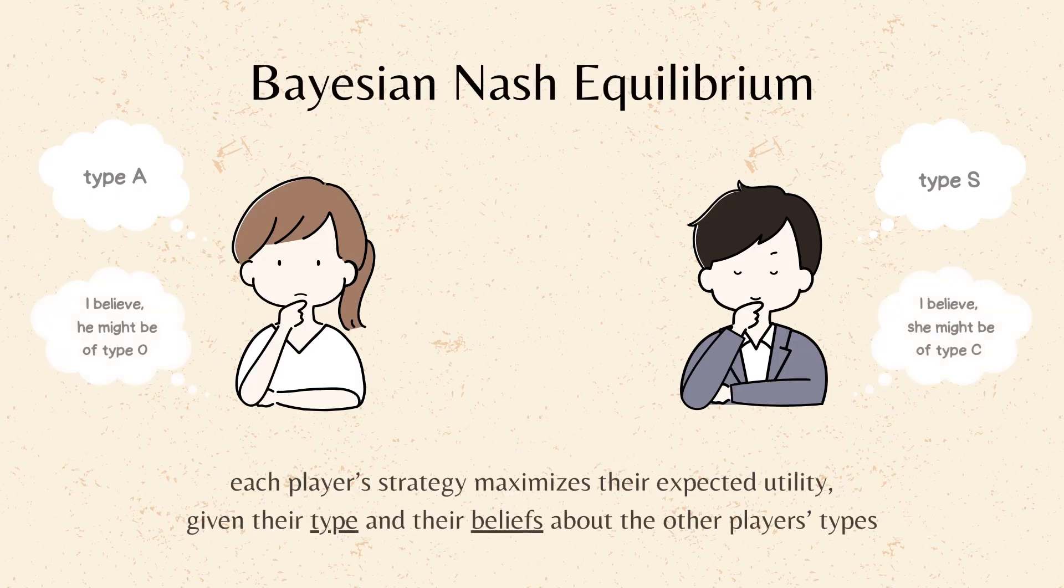In Bayesian Nash Equilibrium, each player's strategy maximizes their expected utility given their type and their beliefs about the other player's type.